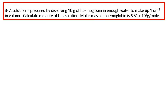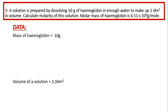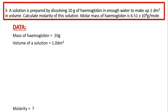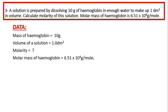Part 3: A solution is prepared by dissolving 10 grams of hemoglobin in enough water to make 1 dm³. Calculate the molarity of this solution. Molar mass of hemoglobin is 6.51 × 10⁴ g/mol. Data: mass of hemoglobin is 10 g, volume is 1.0 dm³, molarity is unknown, and molar mass is 6.51 × 10⁴ g/mol.